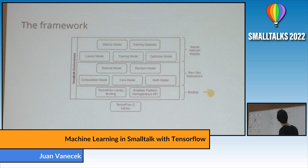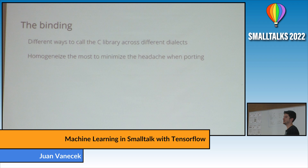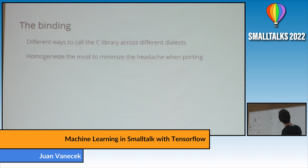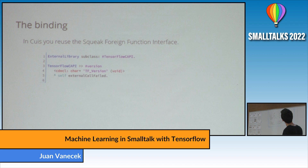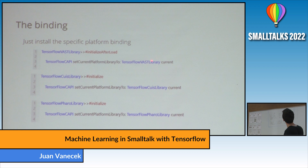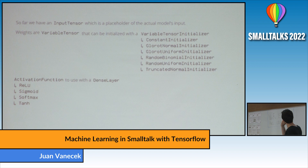A bit more about the binding: each dialect calls the C library in its own way. I tried to minimize the differences between them — they're just packages loaded per dialect. In VA you call the library using platform functions; in Pharo you use the UFFI; in Squeak you have the Squeak Foreign Function Interface. You install a platform library, set it to the TensorFlow C API, and every object in the framework calls through that. For a new dialect, you just define a new platform library subclass.